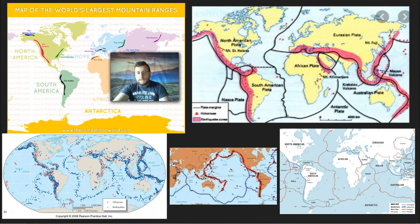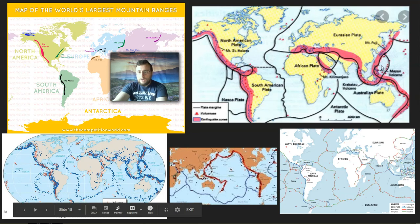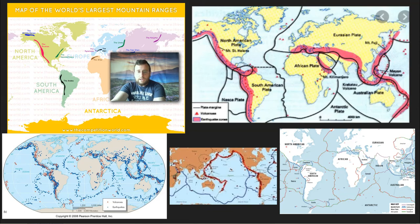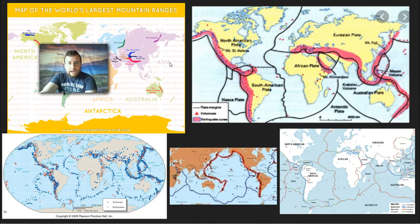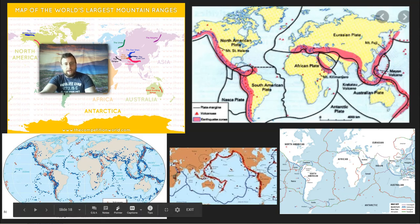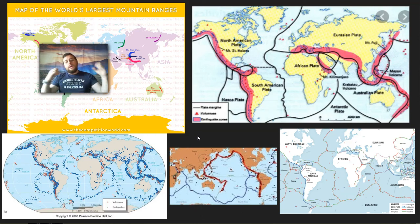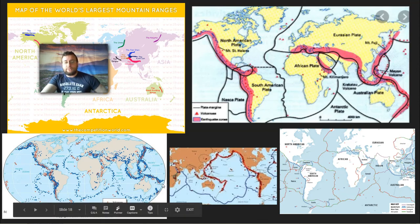The Ring of Fire also extends to the western side of the Pacific, where you see collisions between oceanic plates and other oceanic plates — the Pacific Plate colliding with parts of the Australian Plate in the ocean. Those ocean-versus-ocean collisions cause really deep trenches and chains of islands. Japan, the Philippines, and New Zealand are all island chains on the other side of the Ring of Fire, formed because the ground is uplifting and crumbling due to the collision between those two plates. And of course, you're also going to get volcanoes and earthquakes.